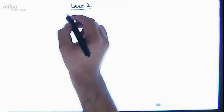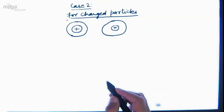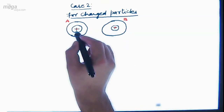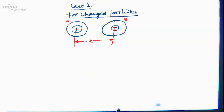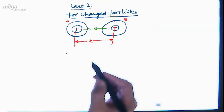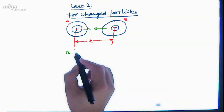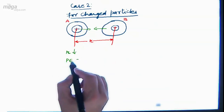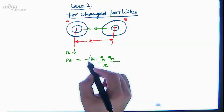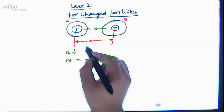Now Case 2: charged particles. Consider two atoms — atom A and atom B — each with a nucleus at the center and electrons revolving in fixed orbits. Let their internuclear distance be 'r'. When these two atoms undergo bonding and approach each other, r will decrease. For charged particles, potential energy is given by: PE = −k × qA × qB / r, where k is a constant, qA and qB are the charges of particles A and B, and r is the separation.